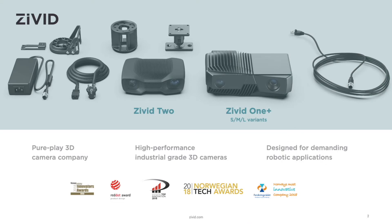What is Silvid? Here is a short presentation of our company and our product portfolio. We are a so-called pure play 3D camera company. Our product is the Civi 1 Plus, which comes in three variants — small, medium, and large — and our newest camera, the Civi 2, was recently released.